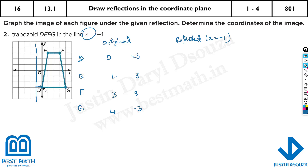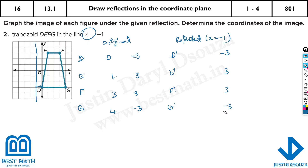Since the reflection is along x is equal to minus 1, that's a vertical line. The y values will never change — they stay the same. So I can write D prime, E prime, F prime, and G prime. The y values — because it's along x is equal to minus 1 — will be the same: minus 3, 3, 3, and minus 3.